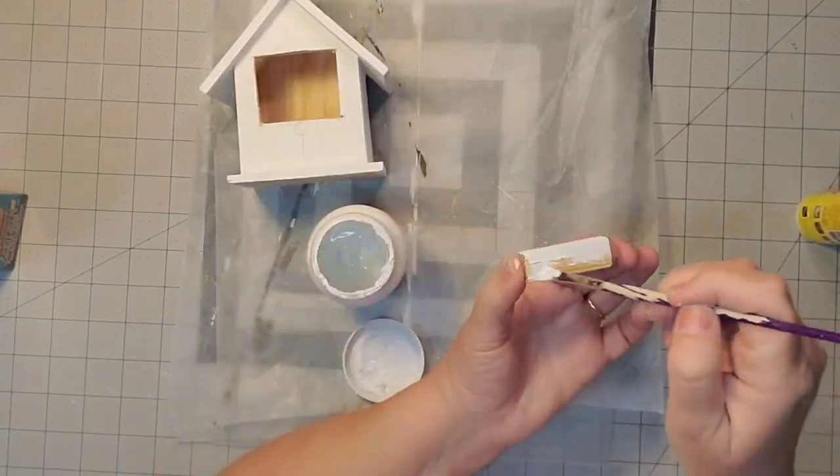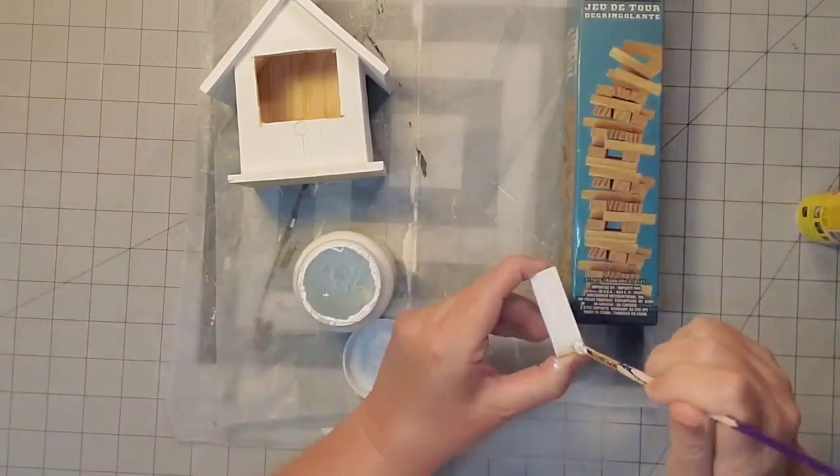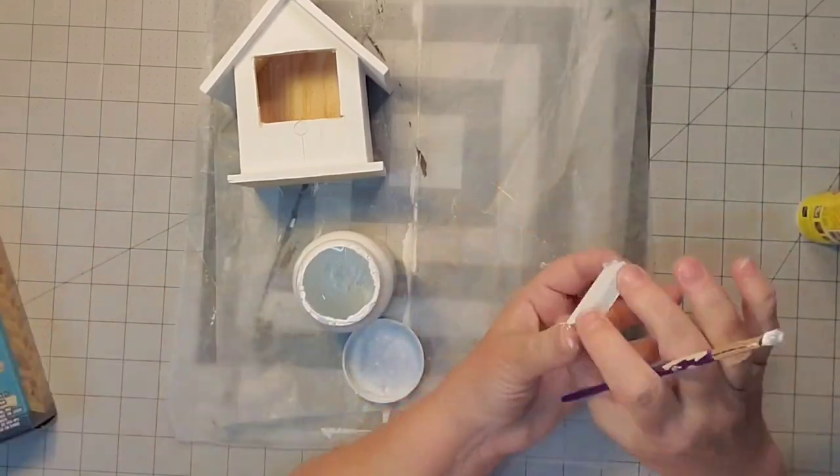Now I'm going to paint one of those tumbling tower blocks from the Dollar Tree, and we'll be applying that to the birdhouse a little later.